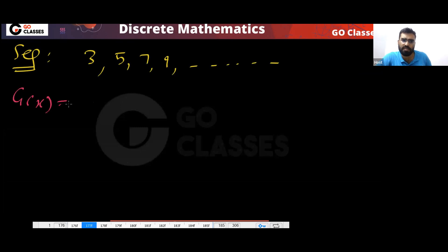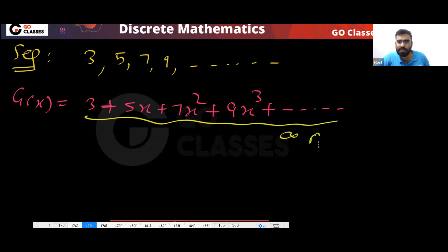So what will be the generating function? The generating function will be 3 + 5X + 7X² + 9X³. This is your favorite infinite AGP.